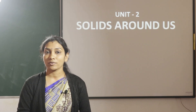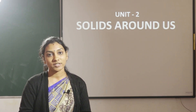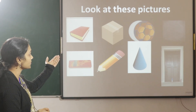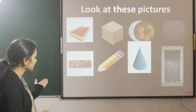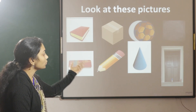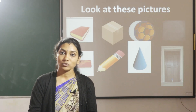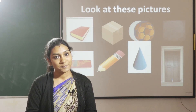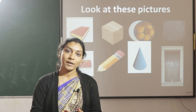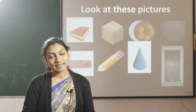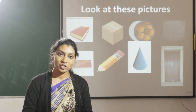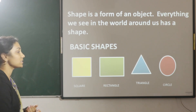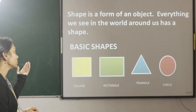So children, what are the things we see around us? We see different objects — objects means things. Look at these pictures children: book, box, ball, blackboard, pencil box, pencil, cone, door. All these have some shapes. Everything around you has a shape — you can see shapes everywhere. A shape of an object tells us what it exactly looks like. A shape is a form of an object. Everything we see in the world around us has a shape.